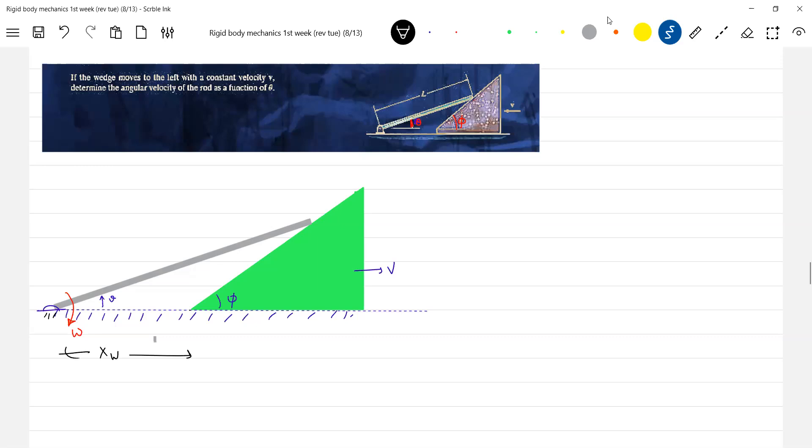This angle will be 180 minus phi, so this will be phi minus theta, or let me take some other variable, beta.